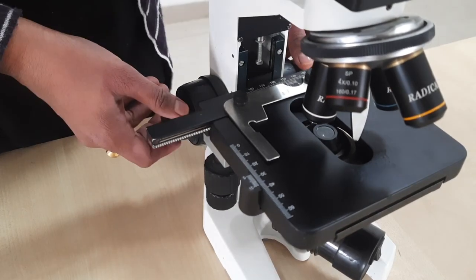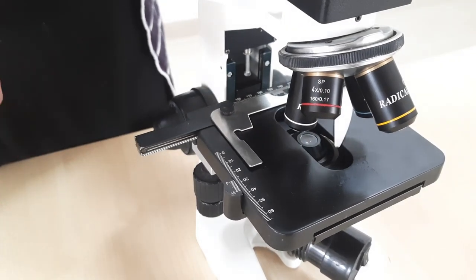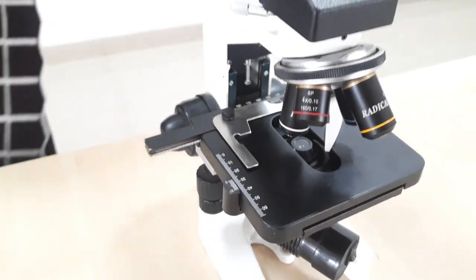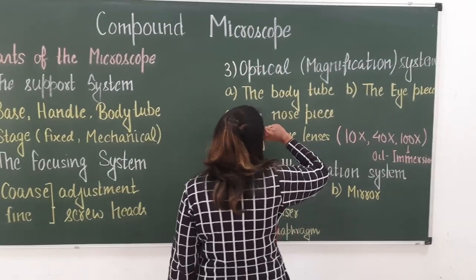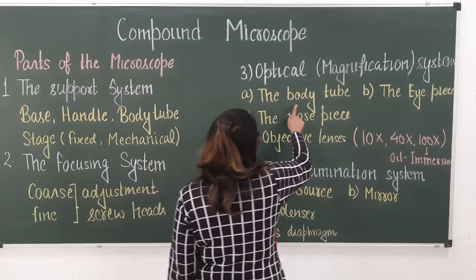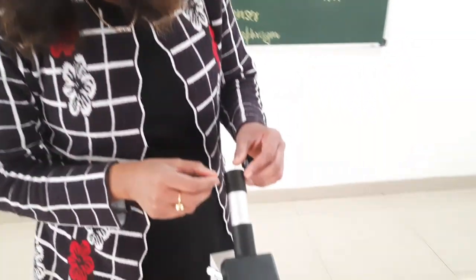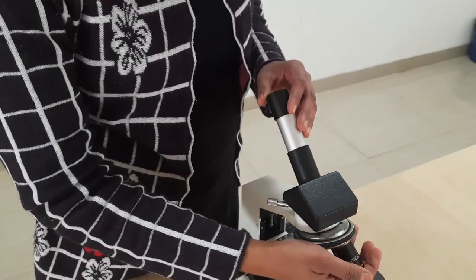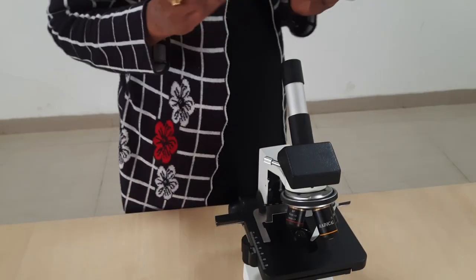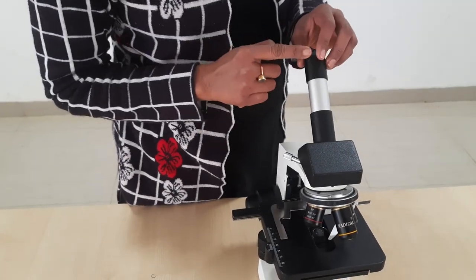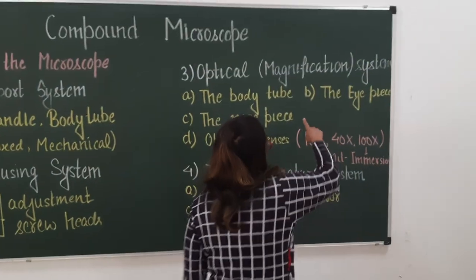Previously, movement of the screws used to move the optical tube. Now, the next system is the optical or magnification system. The body tube extends from the eyepieces to the objective lenses, with an approximate length of 16 to 17 centimeters.